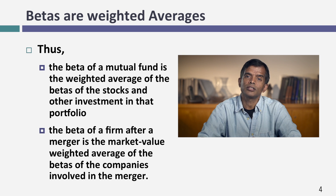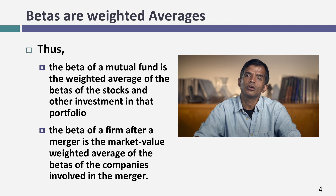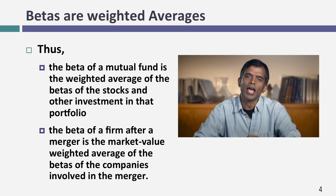The beta for a mutual fund is a weighted average of the betas of the investments in that fund. Here's the property we're going to use in corporate finance. Remember GE with 25 to 30 different businesses? The beta for GE as a company is a weighted average of the betas of each of those businesses. If we could get betas by business and attach weights, we can get a beta for a company by weighting the individual business betas. I call this a bottom-up beta.